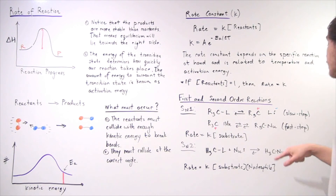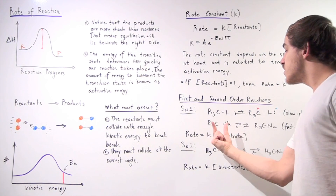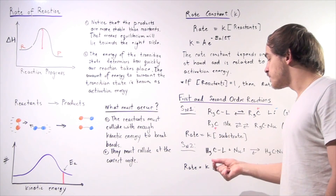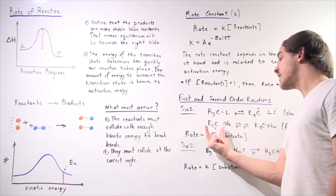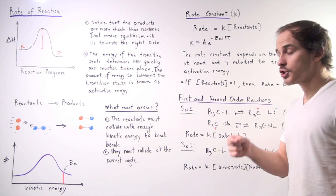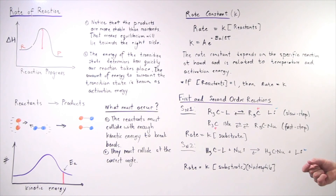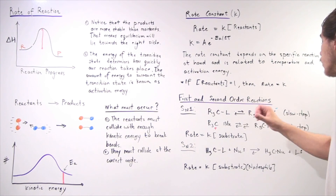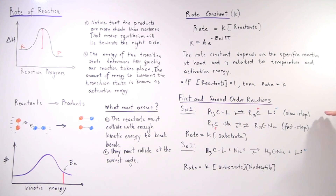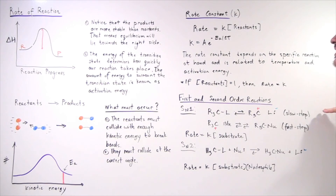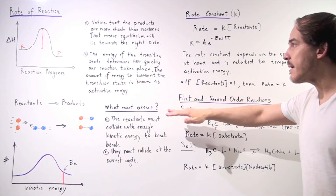And the second step, the fast step, in which the nucleophile was captured — the carbocation was captured by the nucleophile to form the product. The slow step is the rate-determining step.